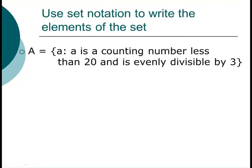So here it says use set notation to write all the elements out in the set. So here our set A is a variable a such that, so this is such that, a is a counting number. So that's the natural numbers, greater than zero, less than 20, and is evenly divisible by three. So we start listing all the numbers that are bigger than zero and whole numbers that are evenly divisible by three.